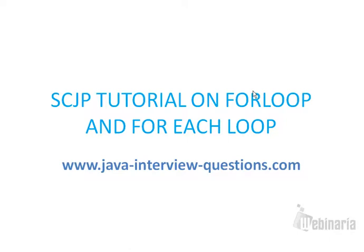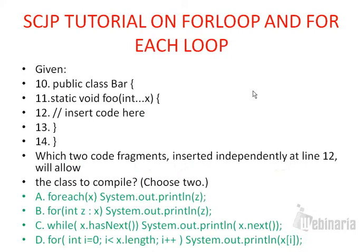This tutorial will help you in learning the for loop and for each loop and when to use the iterator and for loop. Here is the example. First I will go through the question, then I will explain the answers and give you the explanation. We have public class bar, static void foo, int... x — the int colon colon x is nothing but varargs, meaning variable number of arguments. x can accept multiple arguments. At line number 12 we need to insert code from the options given below.